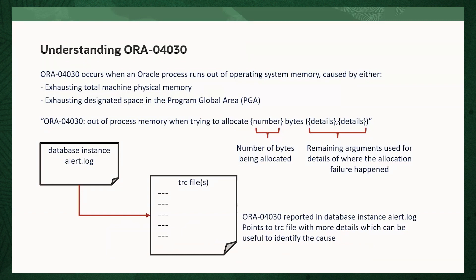Resolving an ORA-4030 error typically involves addressing the memory limitations that caused it. This might include increasing available RAM, adjusting the PGA size, optimizing resource usage, reviewing operating system limits, or identifying and resolving memory leaks.